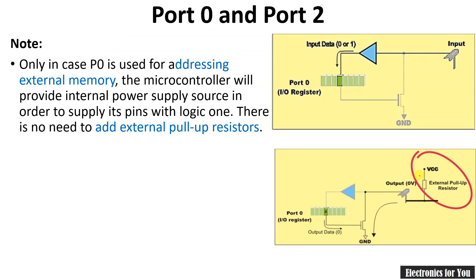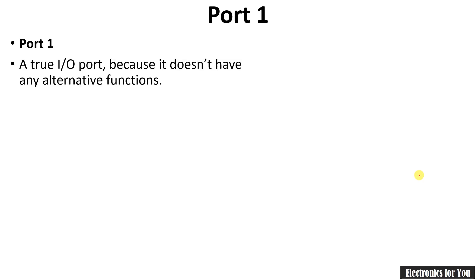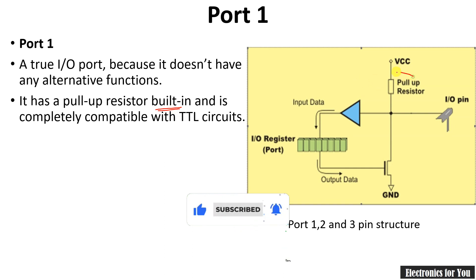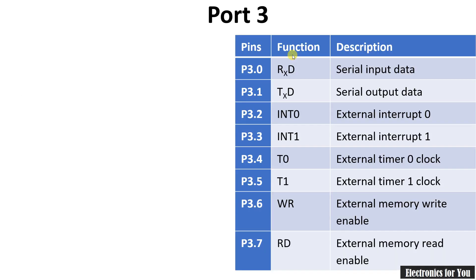Now let's see the function of Port 1. Port 1 has a very simple function — it does not work as any alternate function; it only works as an IO port. It has an internal pull-up resistor built in. Note that this pin structure with internal pull-up resistor applies to Port 1, Port 2, and Port 3. Port 0 is the only port where a pull-up resistor does not exist.